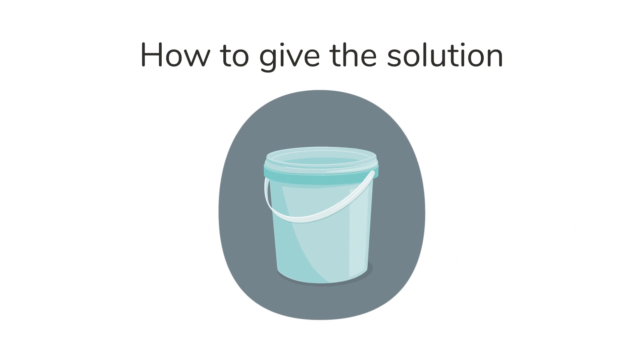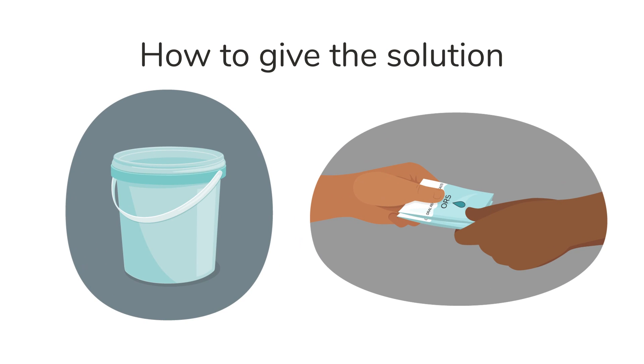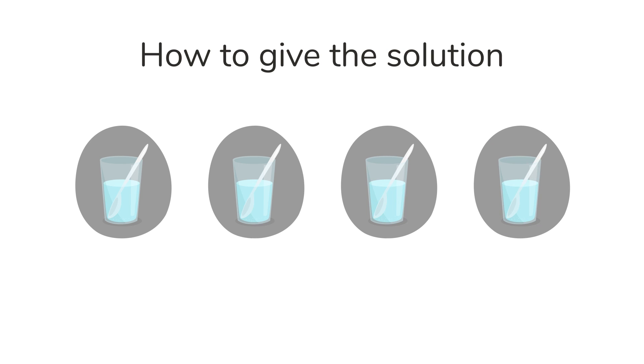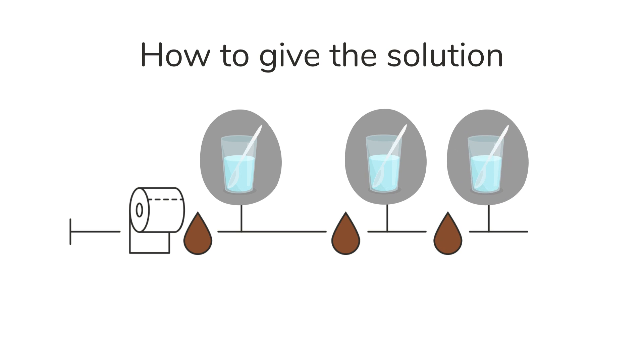Put the extra solution in a container for the caregiver to continue giving the child. If you are giving ORS, give the caregiver extra packets of ORS to prepare more at home. Encourage the caregiver to give the child as much of the solution as they want, as often as possible, but at least a half a cup or 125 milliliters after each loose stool. They need to continue this in addition to feeding until the diarrhea stops.